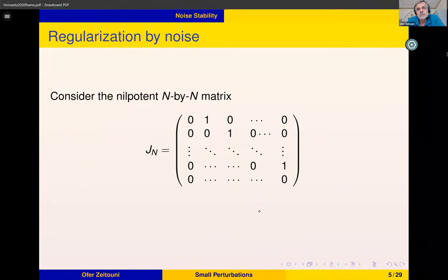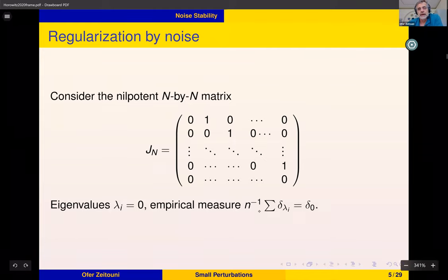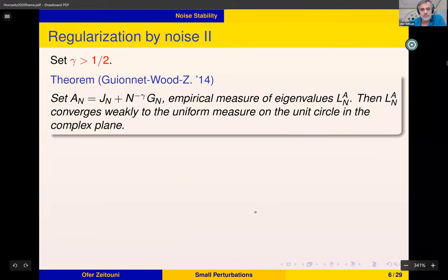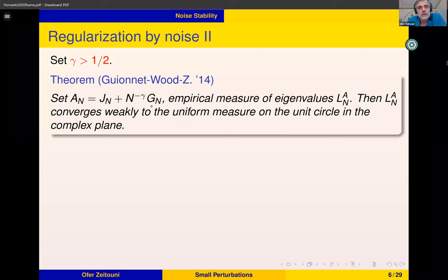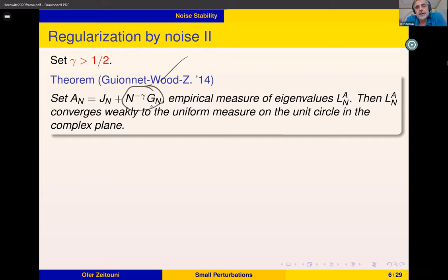Let's go back to this matrix and ask how the phenomenon occurs that the spectrum is far from the initial spectrum. We start with JN with spectrum at zero, add small noise — by 'small' I mean noise decaying polynomially. N^{-1/2} G_N is normalized so the limiting eigenvalues and singular values are of order one. Taking γ > 1/2 means the norm of the perturbation goes to zero. Now look at the empirical measure of eigenvalues.